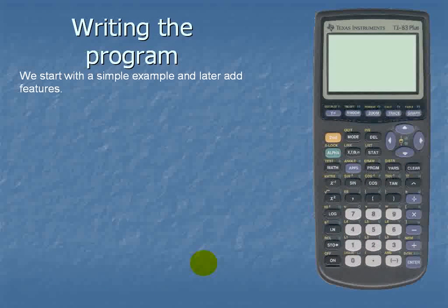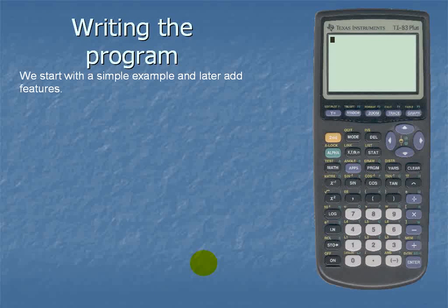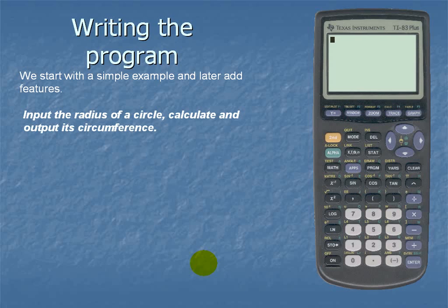We start with a simple example and we later add features. For this example we'll input the radius of a circle, calculate, and output its circumference.